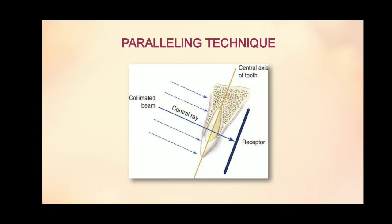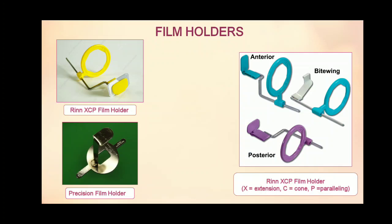Moving on to the next technique, which is the paralleling technique. This technique shows parallelism between the long axis of the tooth and the receptor. The central ray is directed perpendicular to each. A long target film distance is used to ensure parallelism, which is why it is called the long cone technique. The film holders used in this technique are the RIN XCP film holder and a precision film holder. The most common one is the RIN XCP film holder.